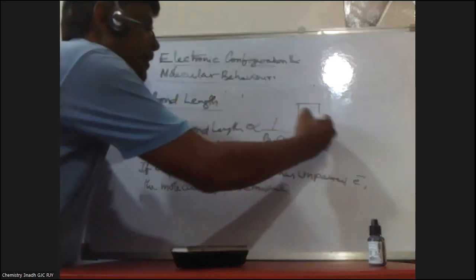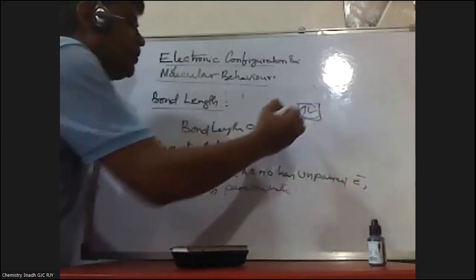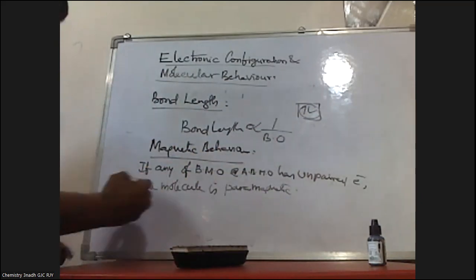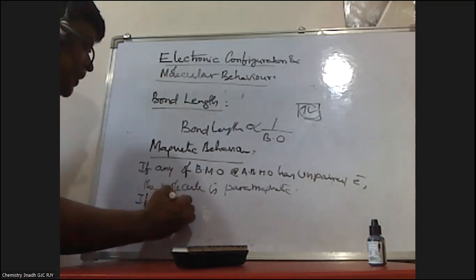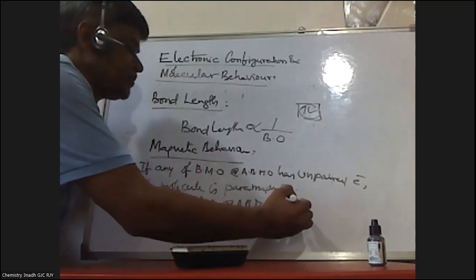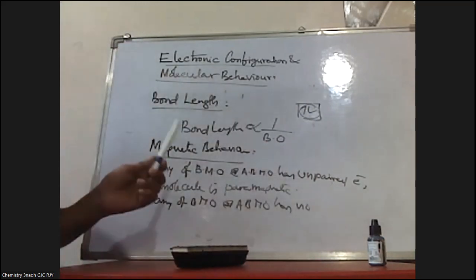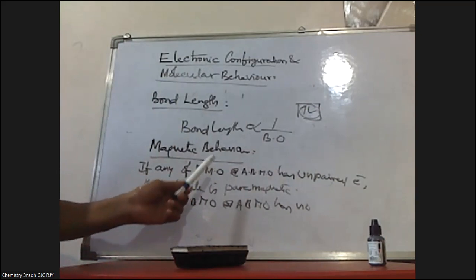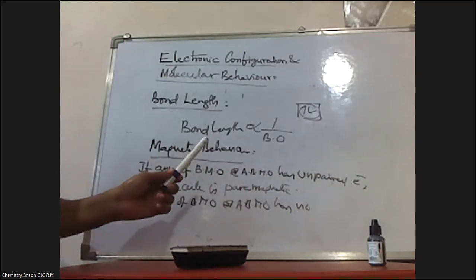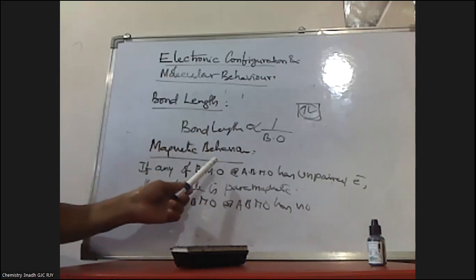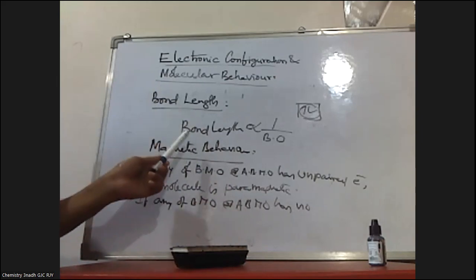We know that every orbital can occupy two electrons, so this is doubly occupied. If it is singly occupied or contains an unpaired electron, then it is paramagnetic. If any of the bonding or anti-bonding molecular orbitals has no unpaired electron, the molecule is diamagnetic. If all the molecular orbitals in a molecule are doubly occupied, the substance is diamagnetic. If one or more molecular orbitals are singly occupied, it is paramagnetic.